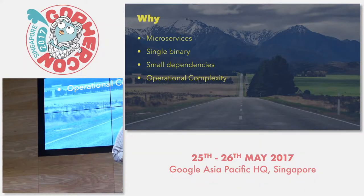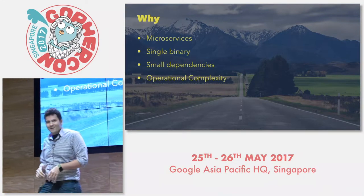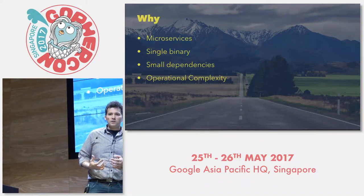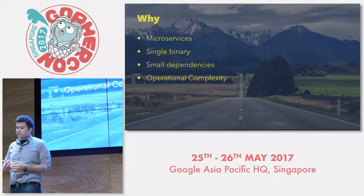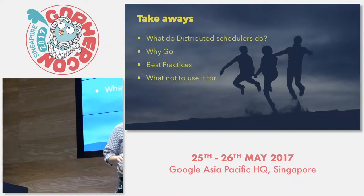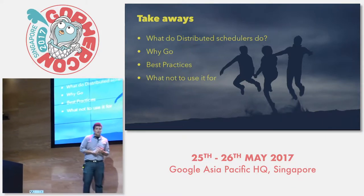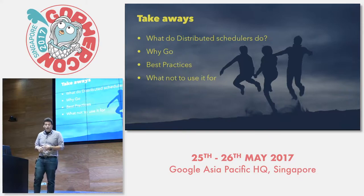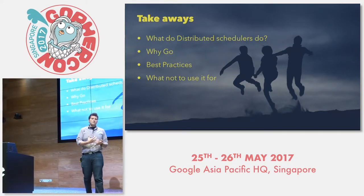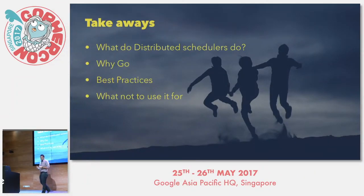We're seeing applications moving towards containers, and the core technology around containers is Docker — one of the most enabling technologies built in Go. As the community uses containers more, we're seeing projects like Kubernetes come up, also written in Go. On both the development and infrastructure sides, Go is the primary language choice for the future of microservices — because of small binaries, simple deployment, and getting rid of third-party dependencies.